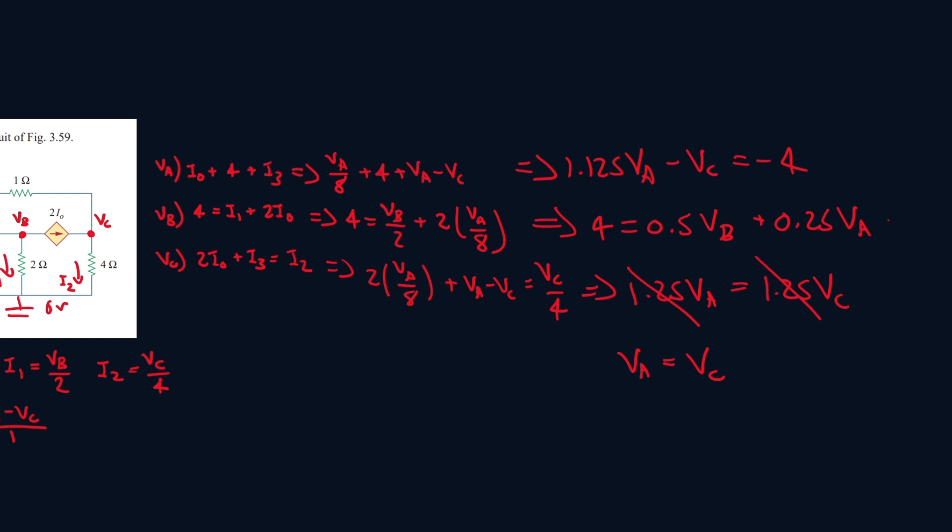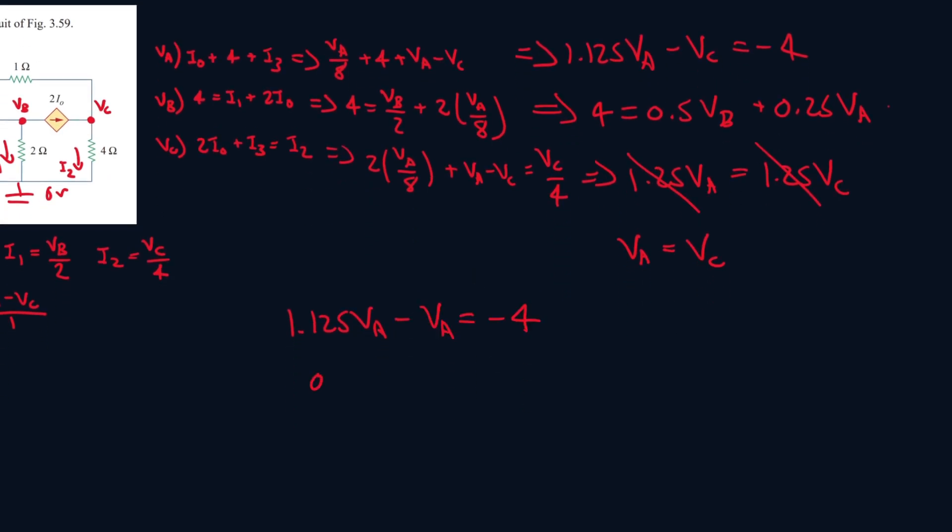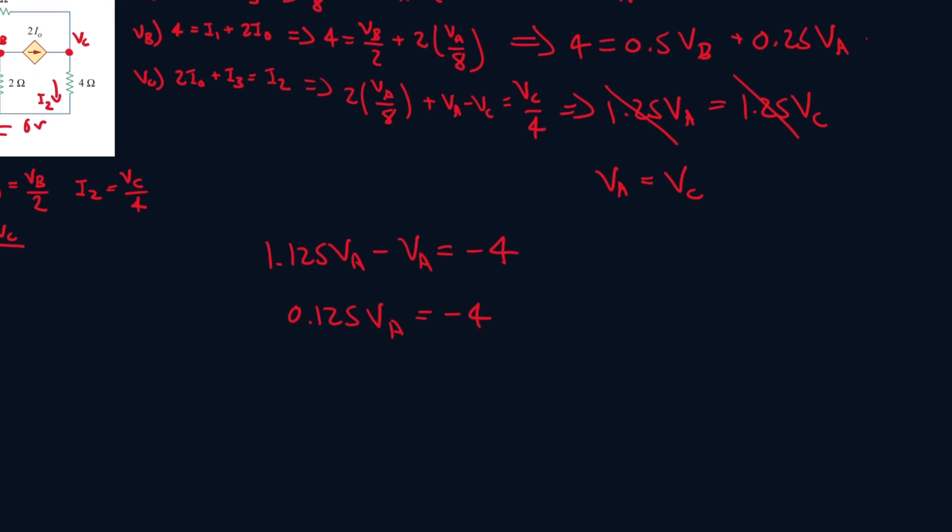Let's bring out this equation: 1.125 VA minus VC equals minus 4. We know VC is equal to VA, so this will be 0.125 VA equals minus 4. Now we can divide both sides by 0.125, and we get VA equals minus 32.